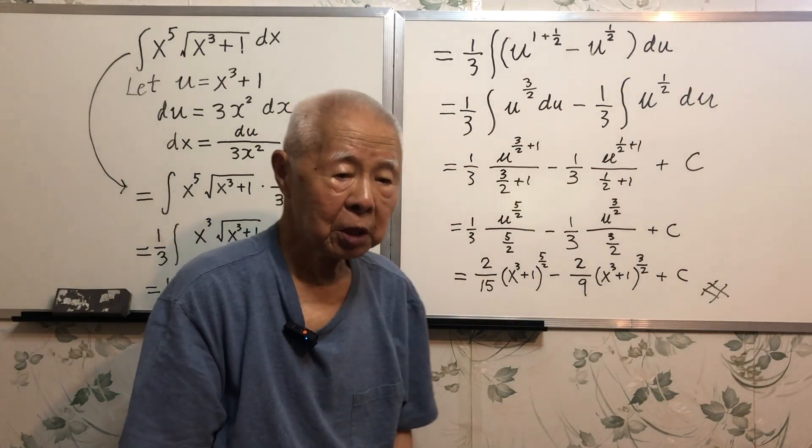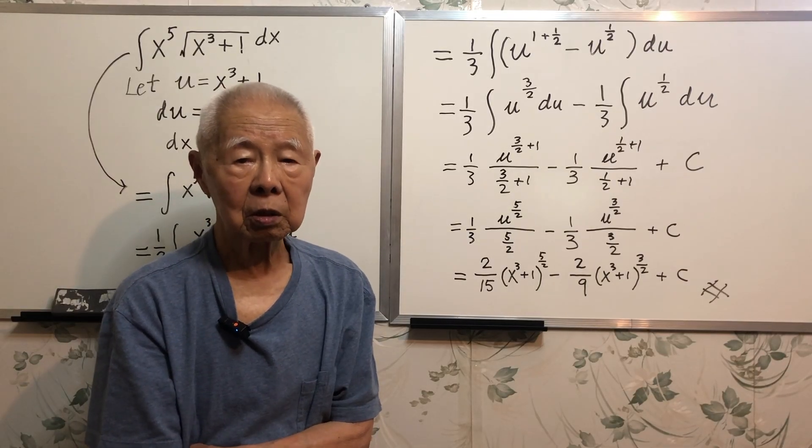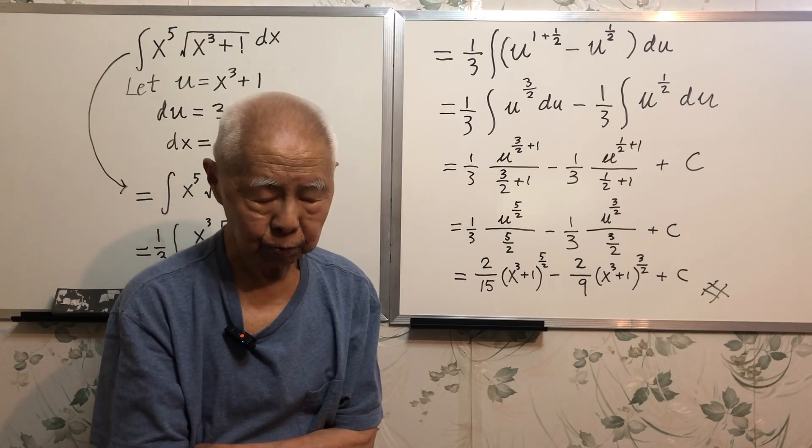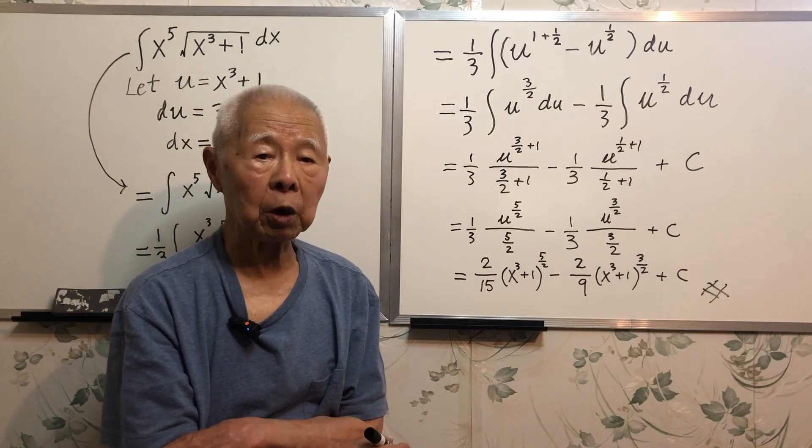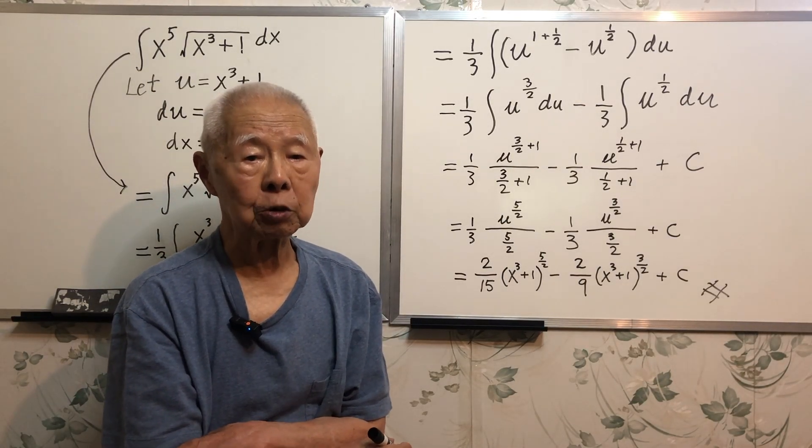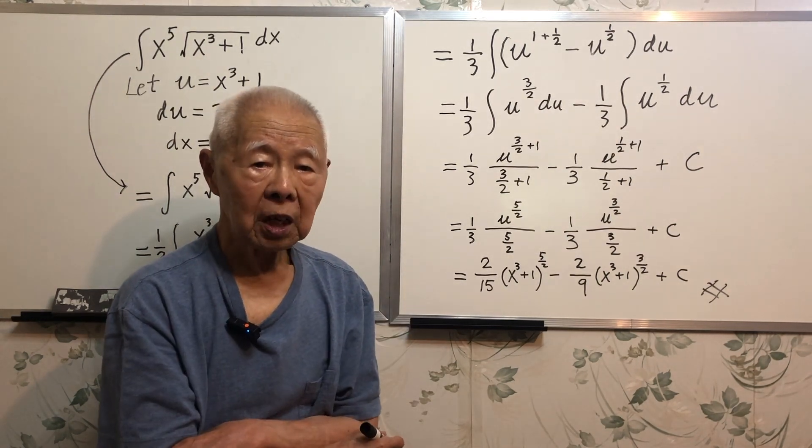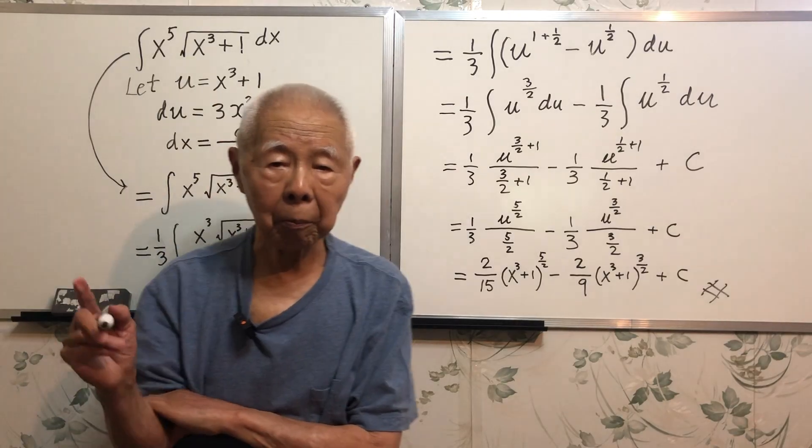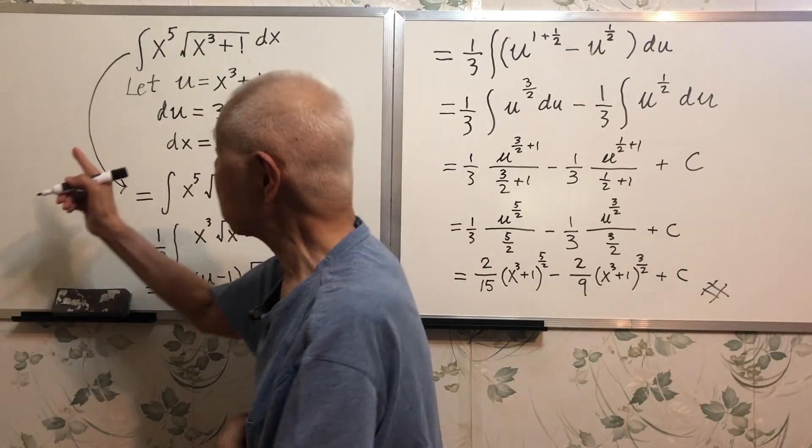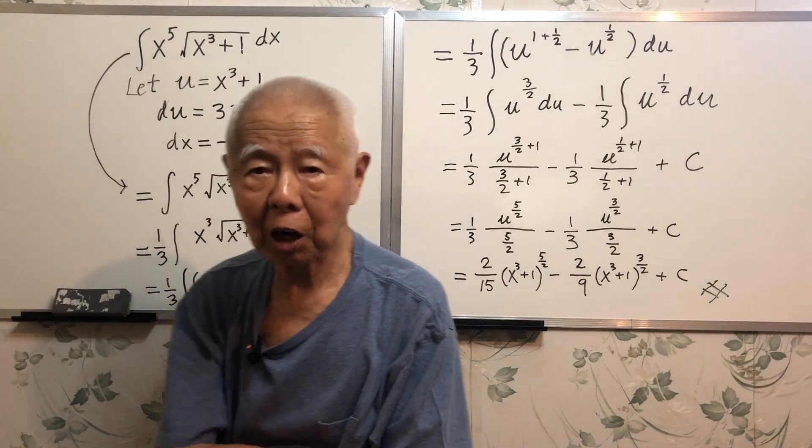So this question is not too difficult, it is just method of substitution. I got this question from a viewer of my YouTube channel. And he not only raised this question, he gave me another question. He changed the exponent five into six, changed this to six. And he asked how do I do it?